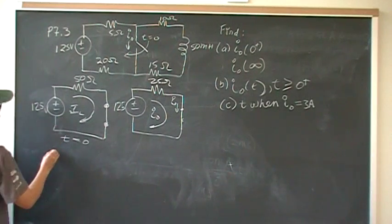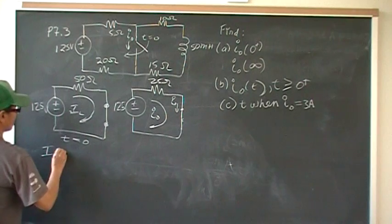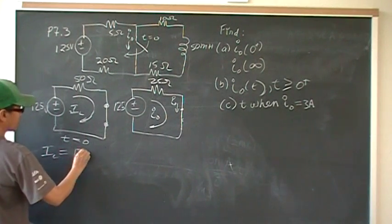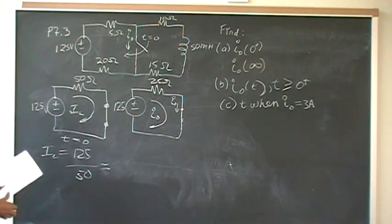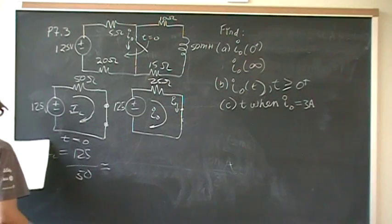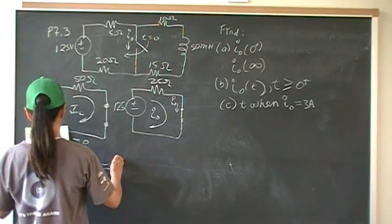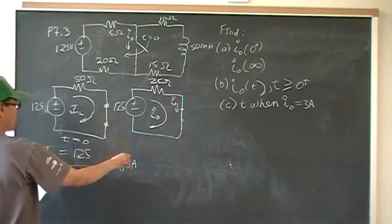So let's find the inductor current. So that's just a straightforward good old Ohm's law, 125 over 50. Last time I checked, that gave me 2.5. That's the initial current that's going through the inductor.